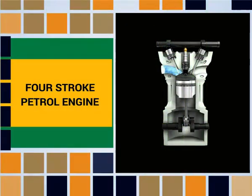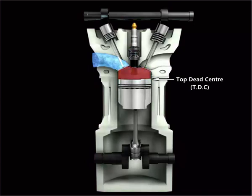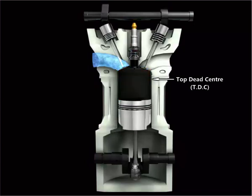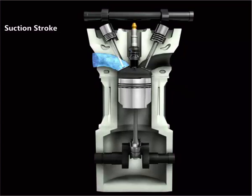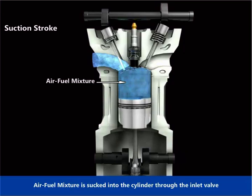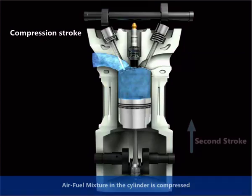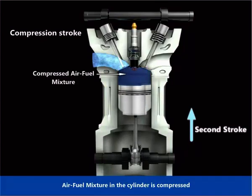4-stroke petrol engine. Top dead center (TDC), Bottom dead center (BDC). Suction stroke: Air fuel mixture is sucked into the cylinder through the inlet valve. Compression stroke: Air fuel mixture in the cylinder is compressed.